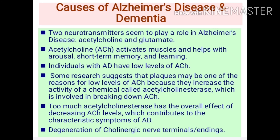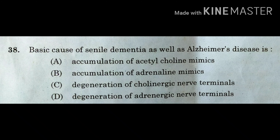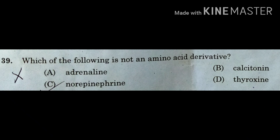Degeneration of cholinergic nerve terminals or nerve endings also causes a decrease in acetylcholine levels. These cholinergic nerve terminals are mainly concerned with the production of acetylcholine. When there is destruction or damage to these nerve terminals, a considerable reduction in acetylcholine leads to Alzheimer's disease or dementia. The correct answer is Option C: degeneration of cholinergic nerve terminals.